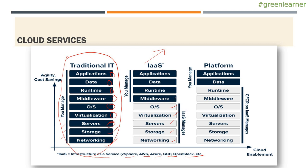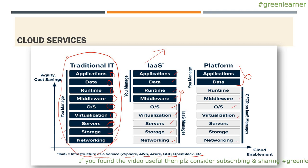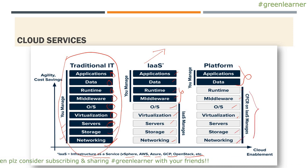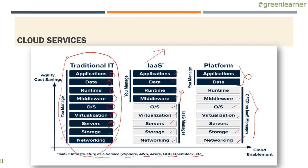With IaaS, you still have to care about the middleware, runtime, data, and application. But moving further forward in time, we can also get rid of runtime and middleware and are left with just the application and data. So now you only have to care about how to develop your application and manage your data. All other stuff — runtime, middleware, OS, operating system, virtualization, servers, storage, networking — all are managed by the platform managers. They give you the platform where you can deploy your application and provide a URL to access whatever you have deployed there.